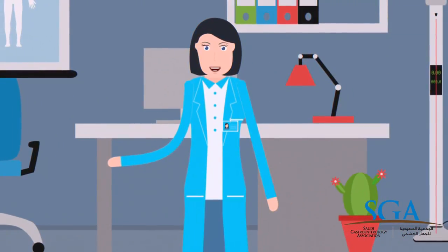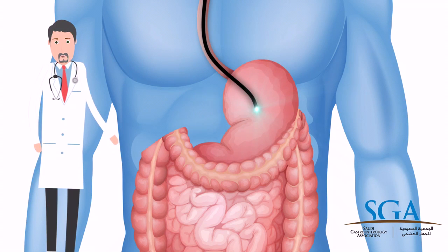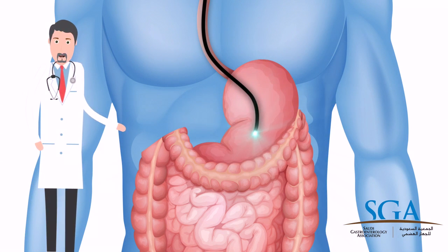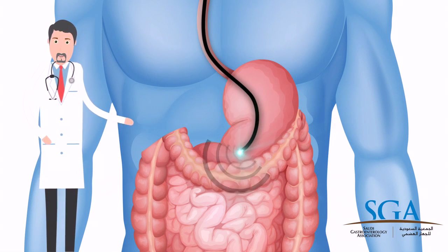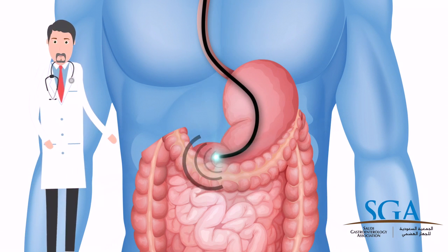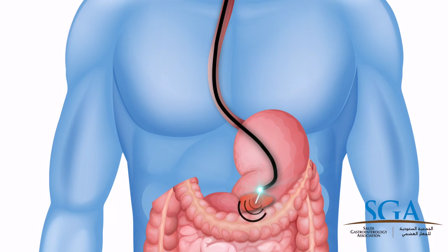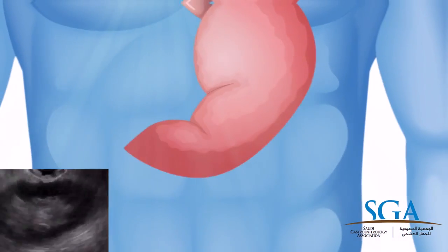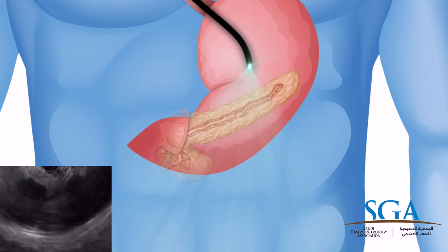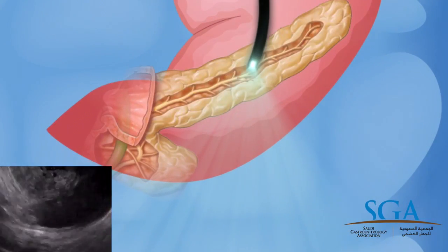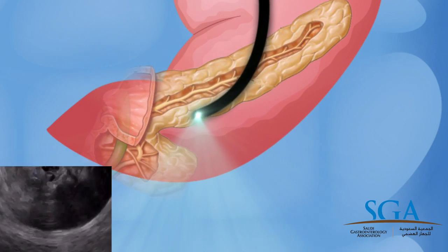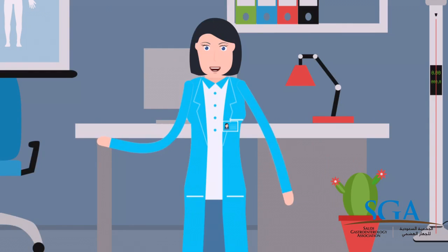What is endosonography? It is a medical procedure that allows examination of the wall of the gastrointestinal tract and its surrounding areas. Why do we need it? Endoscopic Ultrasound targets to evaluate tumors of the wall of the GI tract and allows differentiation of its type and taking samples from it. It is the best method to evaluate diseases of the pancreas and its tumors and to evaluate any mass surrounding the GI tract.